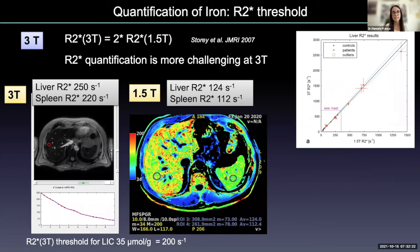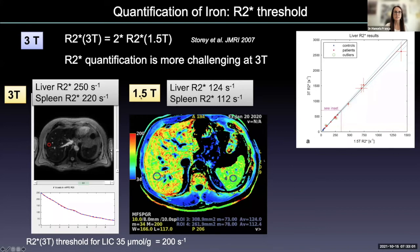At 3 Tesla, there is a linear relationship between R2* measurements at 1.5 Tesla and 3 Tesla by a factor of 2, so the R2* threshold is double at 3 Tesla. For example, in two acquisitions of the same patient at 3 Tesla and 1.5 Tesla, the R2* values at 3 Tesla are double those at 1.5 Tesla.